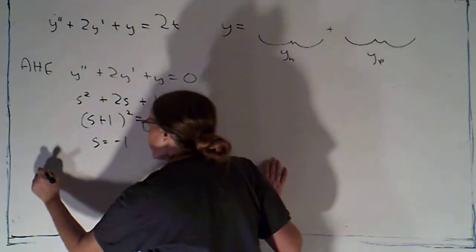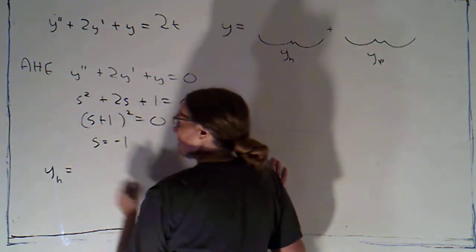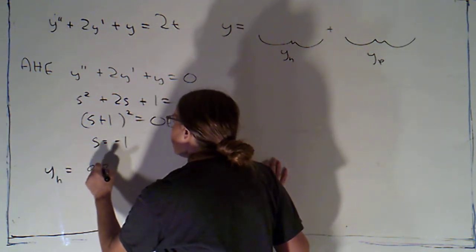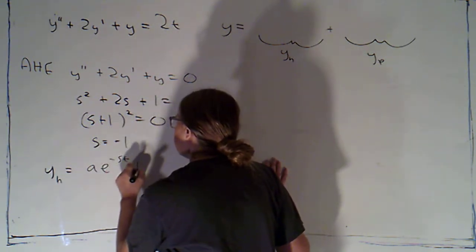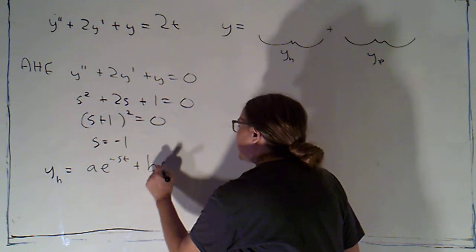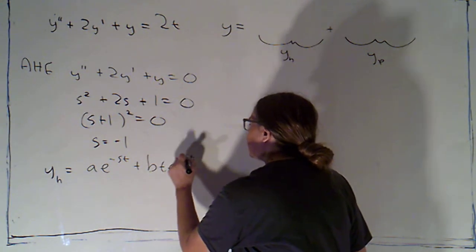Remember, when we have a repeated root, our solutions are going to be some copies of e to the negative st plus some copies of t e to the negative st.